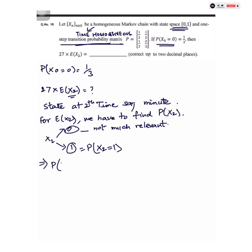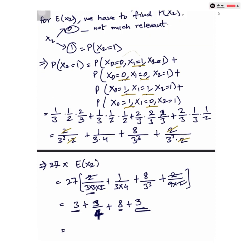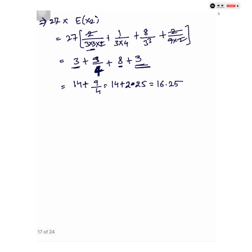From here we find P(X₂ = 1), and 27 times E[X₂] will be equal to 27 times P(X₂ = 1). Upon simplification we get the desired value as 16.25.